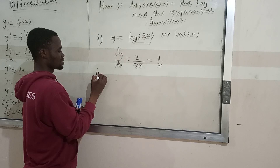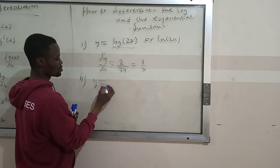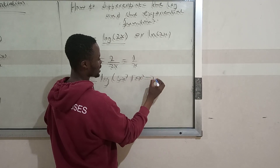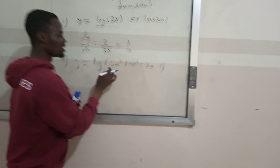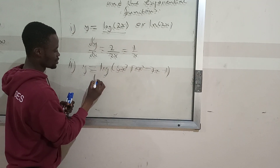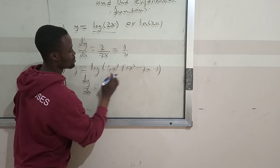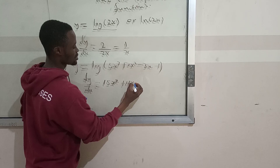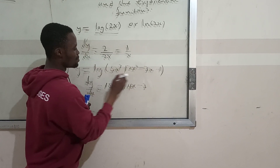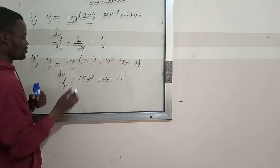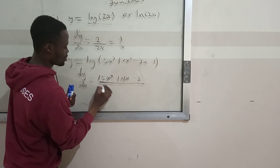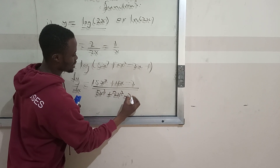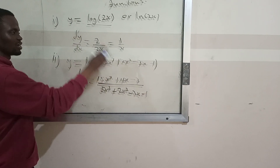You can also get y equal to ln(5x³ + 2x² - 3x - 1). This one is simple. If you want to find dy/dx, you differentiate the one in the bracket — this whole thing — and you get 15x² + 4x - 3, divided by the one in the bracket: 5x³ + 2x² - 3x - 1. That's the differentiation for this whole thing.